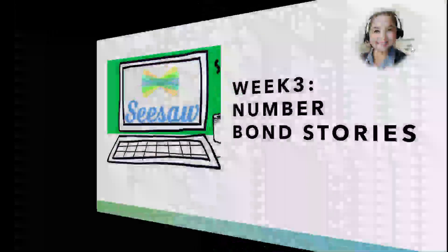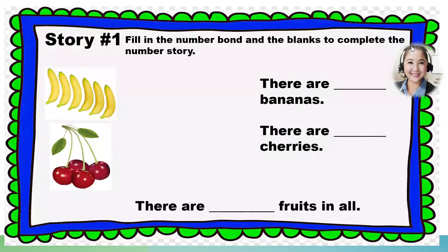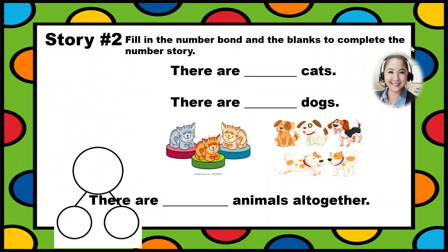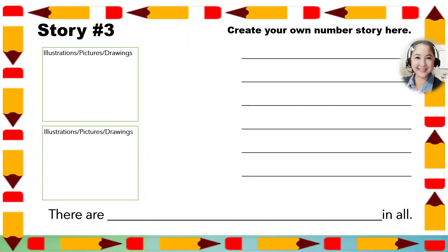Now, I think you are ready to answer the activity posted in your CISO account. Week 3, number stories. Number bond stories. I think you are ready to answer that. So, these are the pages that you can see. You have story number 1. Fill in the number bond and the blanks to complete the number story. Story number 2. And the challenge is for story number 3. You can make your own number story here. You can draw in the illustrations. Or you can put some pictures or drawings. And don't forget to write the total in all.